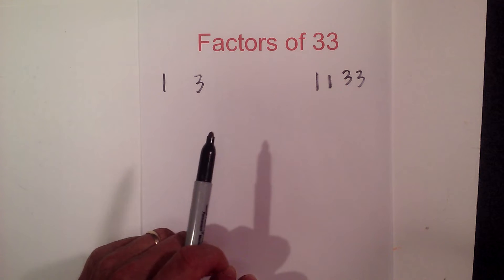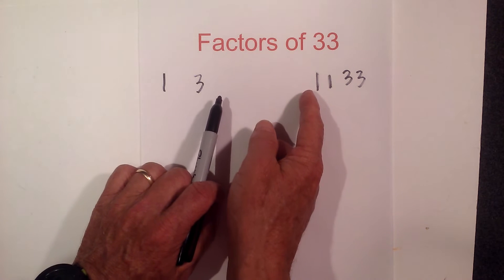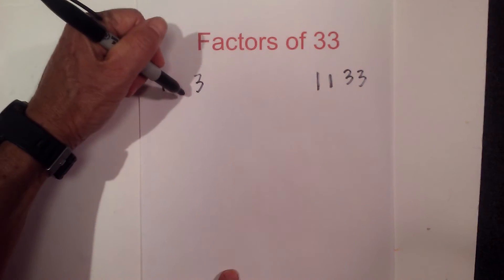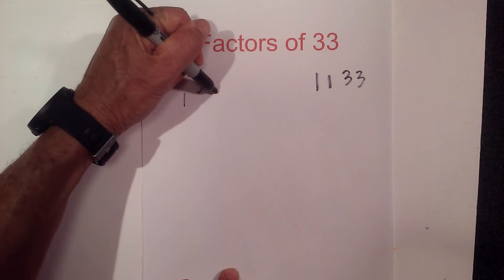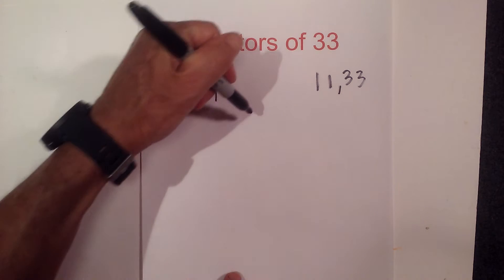6, 7, 8, 9, or 10 won't work either. So once I get to 10, the curtain has been closed. The factors of 33 are 1, 3, 11, and 33.